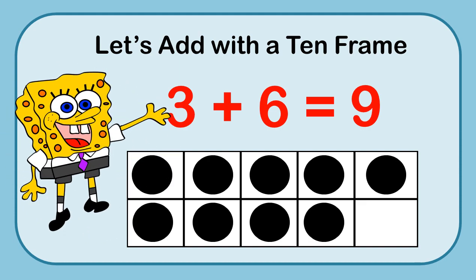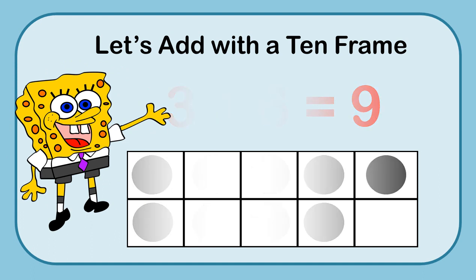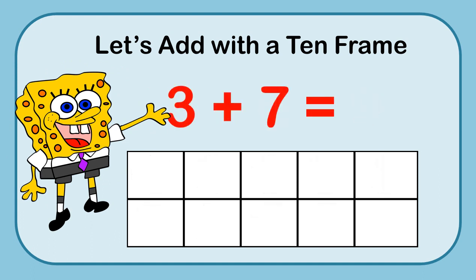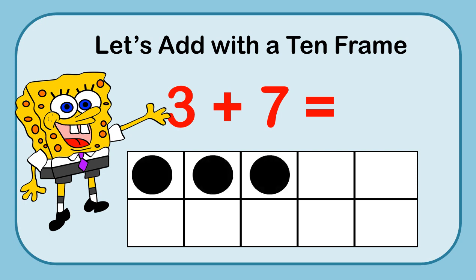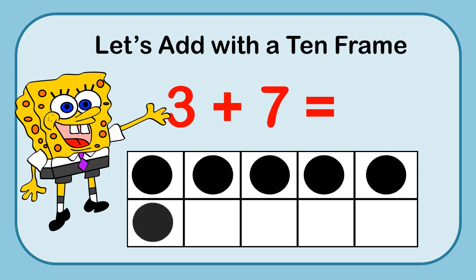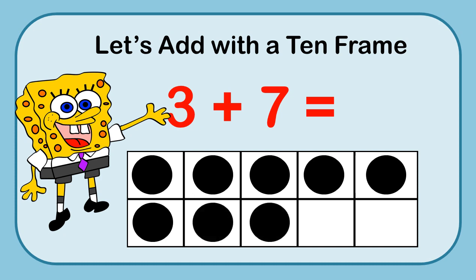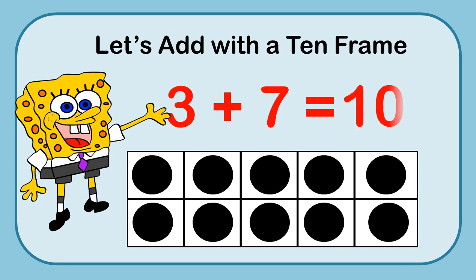Now we have 3 plus 7. I'm going to put my 3 markers in there, and then 7 more: 1, 2, 3, 4, 5, 6, 7. You should know this answer — my 10-frame is completely filled up, so my answer is 10. I shouldn't have to count. I have 5 on the top, 5 on the bottom, and that makes 10.